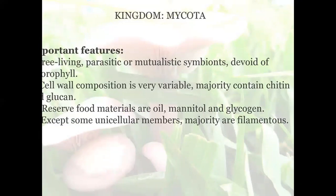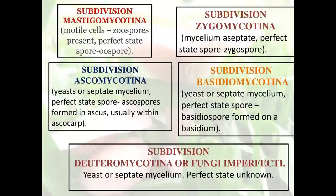Important features of Kingdom Mycota: they are free-living, parasitic, or mutualistic symbionts, devoid of chlorophyll. Cell wall composition is very variable; the majority contains chitin or glucan. Reserve materials are oil, mannitol, and glycogen. Except for some unicellular members, the majority are filamentous. In subdivision Mastigomycotina, motile cells and zoospores are present, and perfect state spores are oospores.